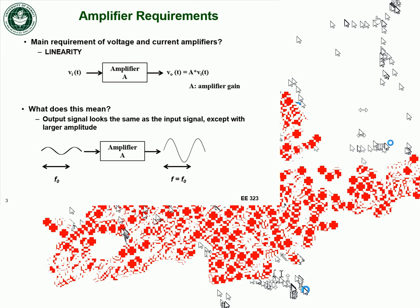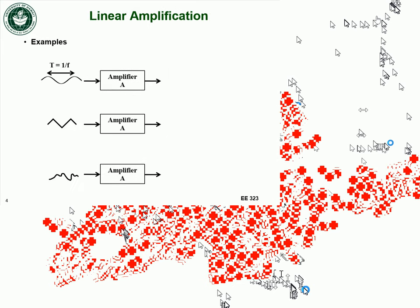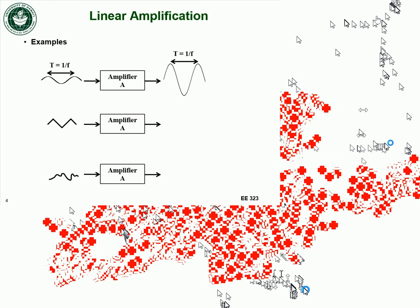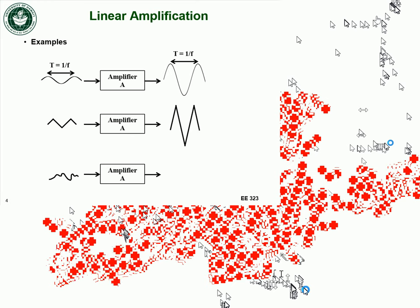These are linear amplifiers. If I have a sinusoidal input, I get a sinusoid with the same frequency and just a bigger amplitude. It applies to other signals as well — if I had a sawtooth wave, I get the same shape at the same frequency with just a larger amplitude. Or if I had some arbitrary signal, it's going to be that same signal with the same frequency components, just a larger amplitude. That's what we expect out of linear amplifiers.